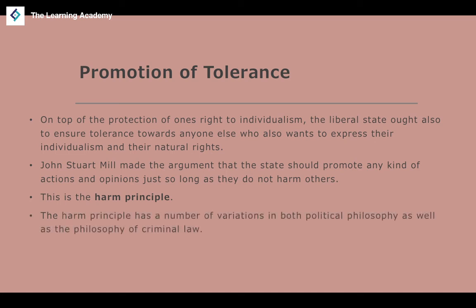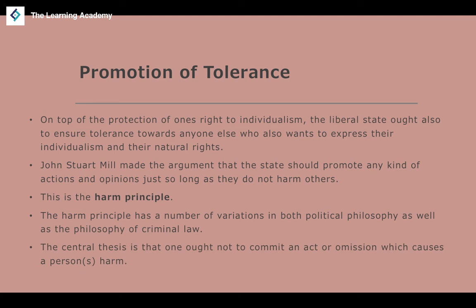The harm principle holds that what makes an action a crime is that it produces harm to people — an action is a crime if and only if it creates harm. Mill said you could be tolerant of anybody as long as that tolerance does not extend to being tolerant of actions that harm other people. The central thesis is: one ought not commit an act or omission which causes a person or persons particular harm.